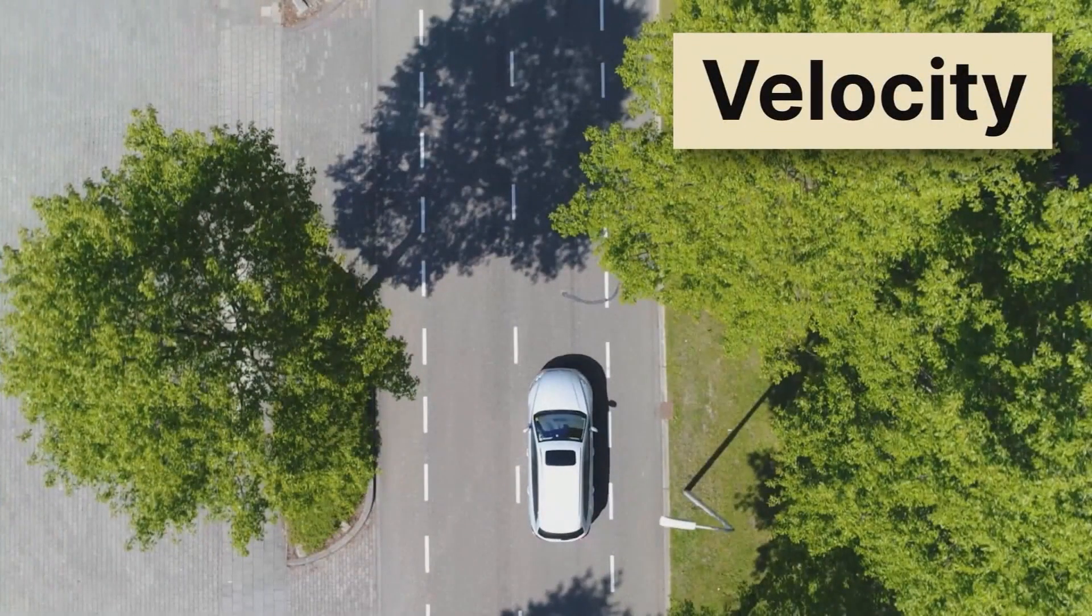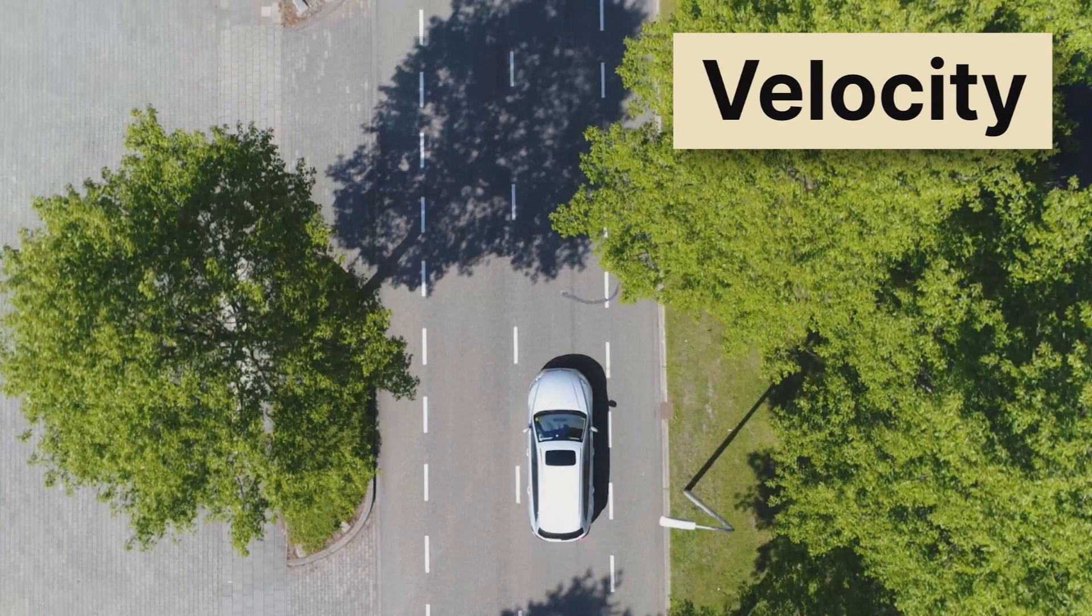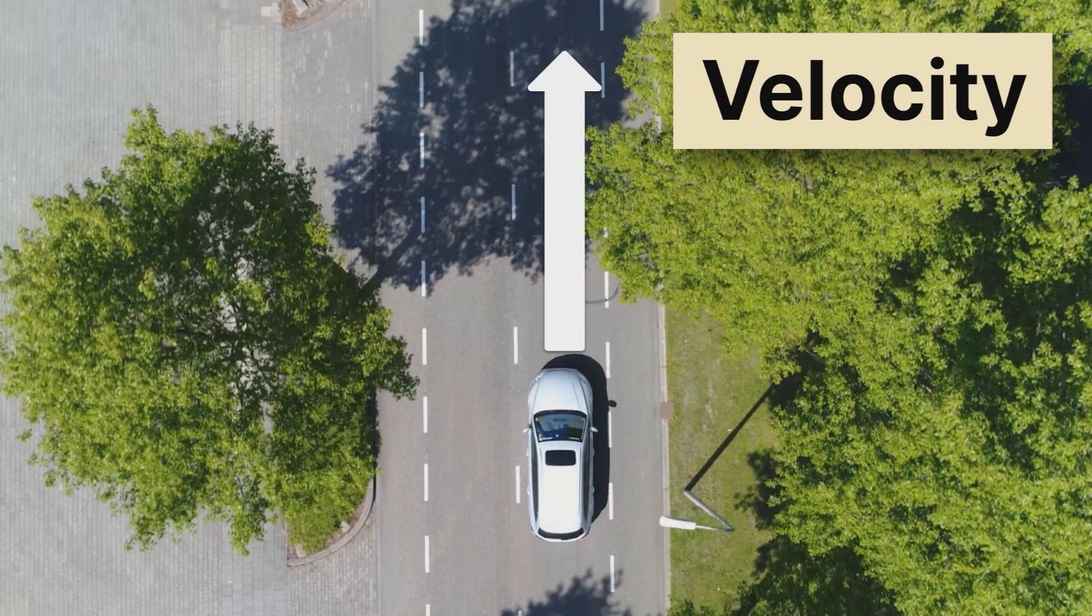First up is velocity. This car is traveling at some speed, which would be a scalar, but the second we tell you what direction it's going, now suddenly it's a vector. A vector has an arrow, a vector points in some direction.